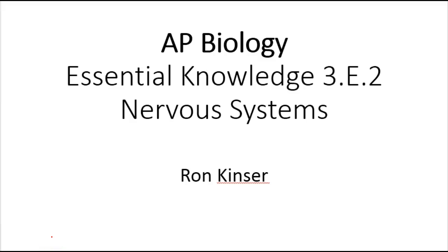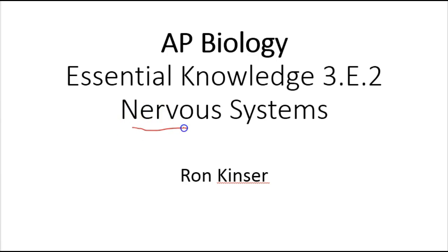This screencast is dedicated to essential knowledge 3E2, which covers the nervous system for AP Biology. In previous sections we've covered how organisms communicate with one another and how organisms take in information about their environment and respond accordingly. The nervous system is the primary means by which an organism takes in that information, transduces it throughout the organism, communicating with other physiological systems.